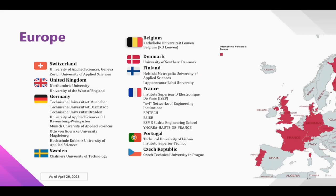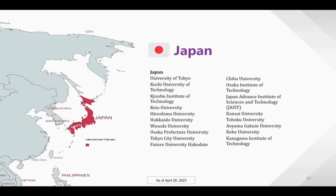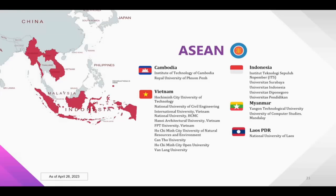If you look at the list of universities, you will see that these are reputable universities in each country. We have MOU with universities in Europe, and if you would like to go study there as an exchange student, you can. We have many famous universities from Japan including the University of Tokyo and Hokkaido University. We also have good relationships with many universities in ASEAN.